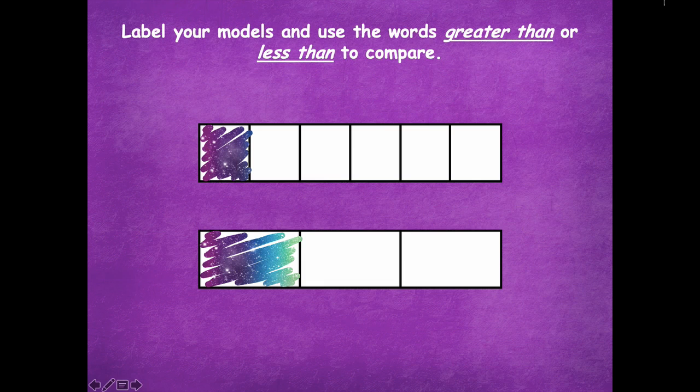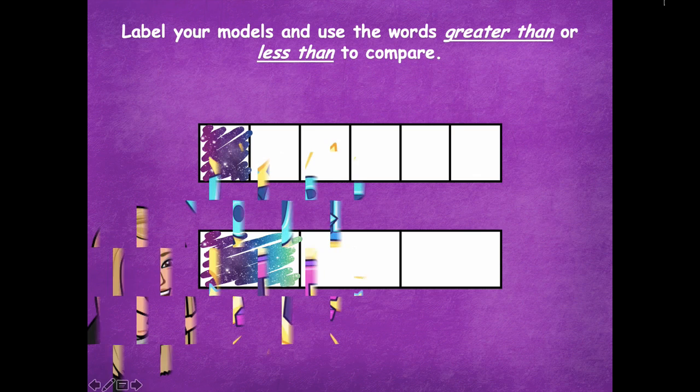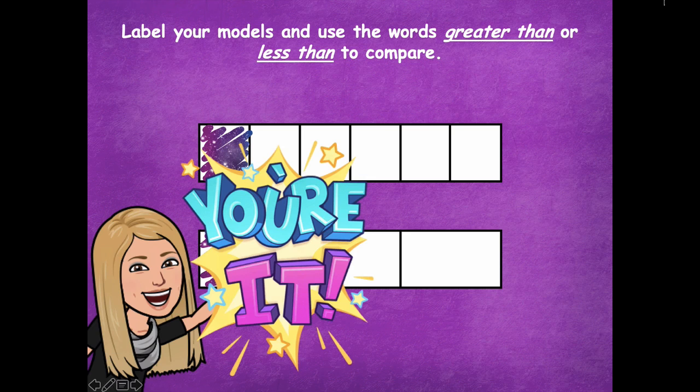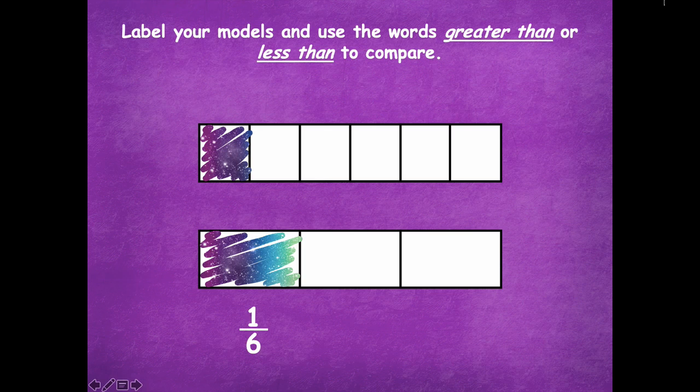Label your models and use the words greater than or less than to compare. So write each fraction or each model in fraction form, and then compare them using greater than or less than. So pause the video, and you're going to be writing it out. So you would say, let's say for example with this one, I'm not going to actually use this one. I could say one eighth is less than one half. Okay, you would write that out on your board. So do that using these examples with one sixth and one third. All right friends, so I came up with one sixth is less than one third. Did you guys come up with that too?